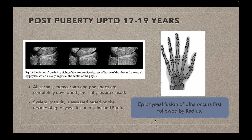The last stage is the post-pubertal stage, up to 17 to 19 years. During this stage, all the carpals, metacarpals, and phalanges are completely developed and their epiphyseal plates are closed. Skeletal maturity is assessed based on the degree of fusion of the epiphysis of the ulna and radius. Epiphyseal fusion of the ulna occurs slightly earlier compared to the radius. In the picture, we can see progressive fusion of the ulna and radial epiphysis from left to right, beginning from the center and going laterally. This is how we can estimate age based on x-rays of the hand and wrist. Thank you very much.